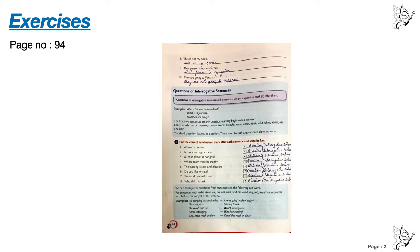Number six: Do you like to travel? Give a question mark and write question, interrogative sentence. Number seven: Two and two make four. Full stop — it's a statement, assertive sentence. Number eight: Who did this task? Question mark — question, interrogative sentence.